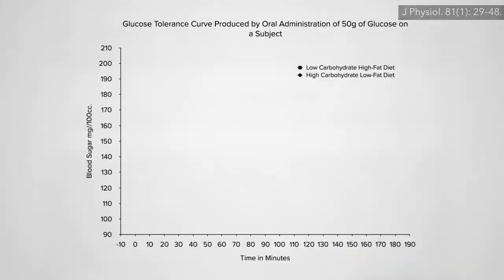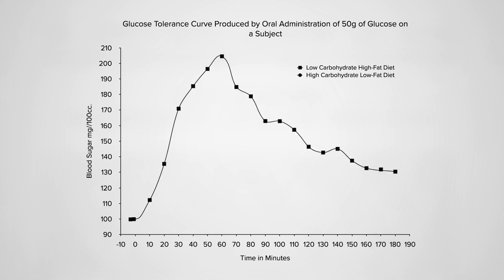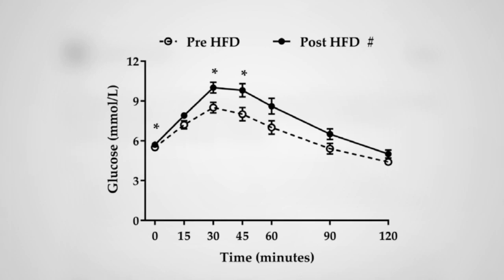One week on an 80% fat diet, you can quintuple your blood sugar spike in reaction to the same carb load compared to a week on a low-fat diet. Even a single day of excessive dietary fat intake can do it.